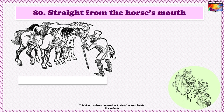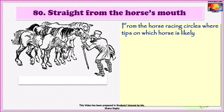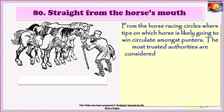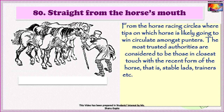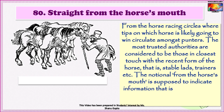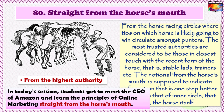The last idiom in section 8 is 'Straight from the horse's mouth.' This idiom originated from horse racing circles where tips on which horse is likely to win circulate among punters. The most trusted authorities are those in closest touch with the recent form of the horse — stable lads, trainers, etc. The notional 'from the horse's mouth' indicates information that is one step better than even that of the inner circle, i.e., the horse itself. So the idiom means from the highest authority. For instance: 'In today's session, students get to meet the CEO of Amazon and learn the principles of online marketing straight from the horse's mouth.'